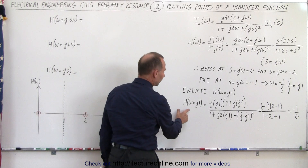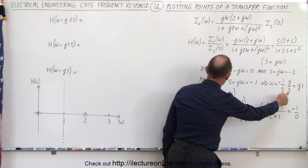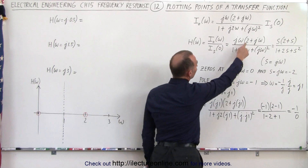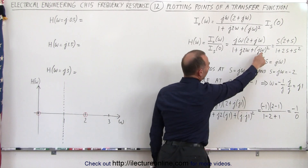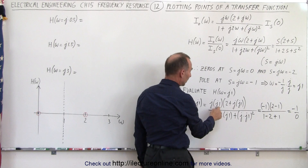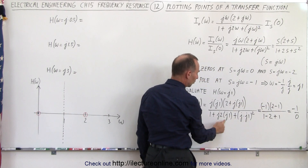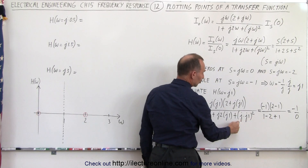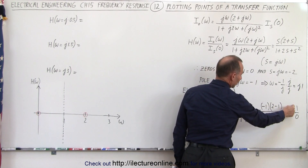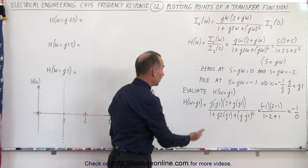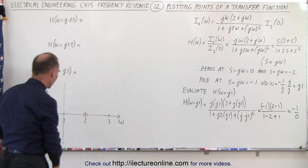If we evaluate the transfer function for various values, we can plot those points. If ω equals j1 — which we already know gives us a pole — substituting j1 for every ω: j times j is negative one, giving negative one; in the denominator, one plus j times j negative one times two is negative two; and j times j squared gives positive one. The numerator becomes negative one and the denominator becomes zero — anything divided by zero is infinite, confirming we have a pole there.